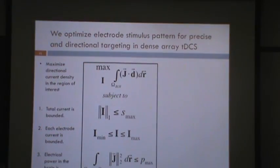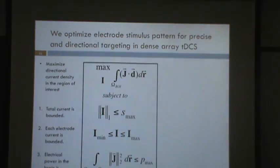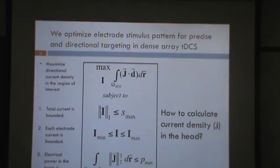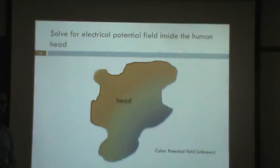The related optimization problem looks like this: we maximize the current in the region of interest along a particular direction, we limit the total current and each individual electrode current to prevent high current intensity locally, and through a third constraint we ensure the solution is proper. To calculate current density in the head, we used numerical methods. I will briefly describe what that numerical method is — we would like to find the potential field in the head, knowing only what happens on the head boundary: where current is applied and how much.